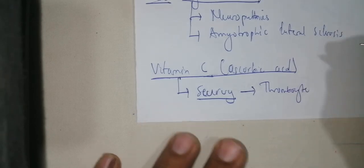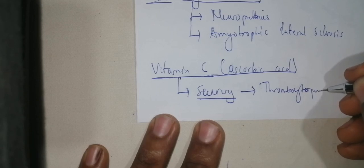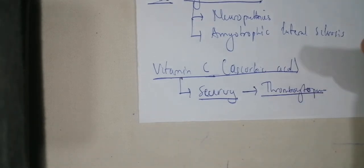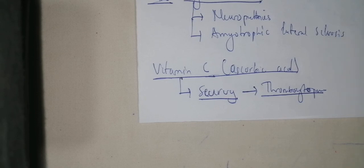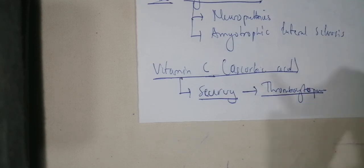In scurvy, you have a disorder with bleeding gums, bleeding eyes, and bleeding in general due to thrombocytopenia. This is different from vitamin K deficiency: in vitamin K deficiency you have a low level of coagulation factors, but in scurvy you have a low level of thrombocytes. The thrombocytes are the ones capable of causing spontaneous bleeding — at the skin, teeth, nose (epistaxis), and even the eyes. That is scurvy disease.